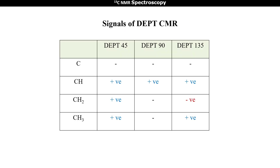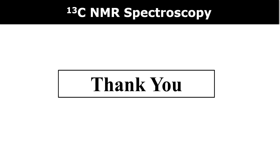Thus with the help of the DEPT technique, the signals obtained are: for quaternary carbon, no signals are seen in any of the three DEPT experiments. In DEPT 45, positive signals are given for CH, CH2, and CH3. In DEPT 90, only the CH group carbon gives a signal; other carbons are suppressed. In DEPT 135, positive signals are obtained for CH and CH3, and a negative signal for CH2. Thus DEPT is a very good technique to distinguish between CH3, CH2, and CH group carbon atoms.